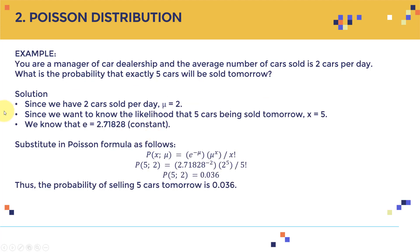Let's assume you are a manager of a car dealership and you know the average number of cars sold is two per day. The question is: what is the probability that exactly five cars will be sold tomorrow? Since the average is two cars per day, mu equals two. Since we want the likelihood of five cars being sold, X equals five.